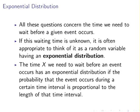All of these questions concern the time we need to wait before a given event occurs. If this waiting time is unknown, it is often appropriate to think of it as a random variable having an exponential distribution. The time X — our waiting time — has an exponential distribution if the probability that the event occurs during a given time is proportional to the length of the time period. That is actually quite an important statement.